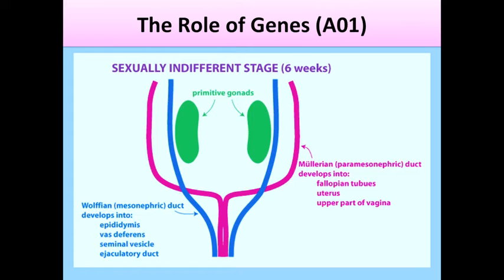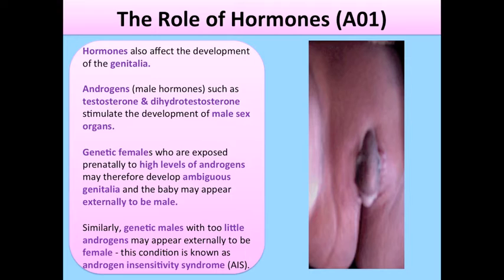External genitalia strongly influences gender development through the effect of hormones which they produce, and due to psychological and social factors. Hormones also affect the development of the genitalia itself.